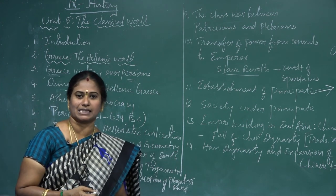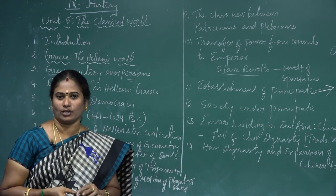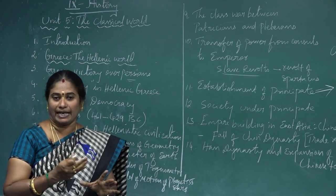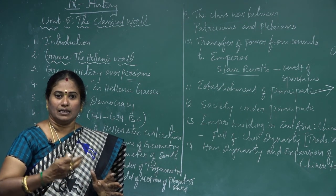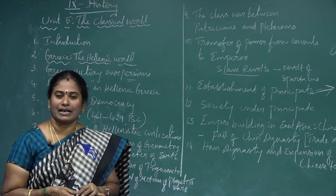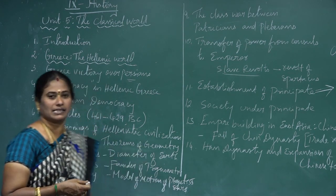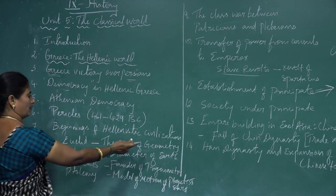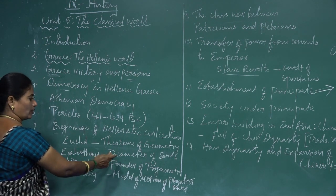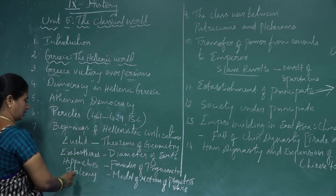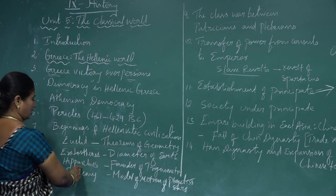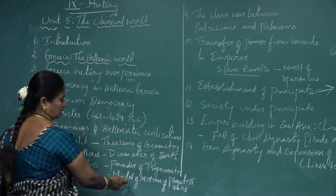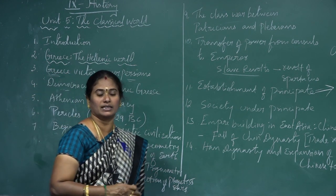The Greek school of science, mathematics, and philosophy reached its peak in the Greek-Egyptian city of Alexandria. There are some famous persons - Euclid founded the theorems of geometry; Eratosthenes calculated the diameter of the Earth; Hipparchus was the founder of trigonometry and founded the model of the motion of the planets and stars.